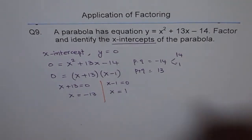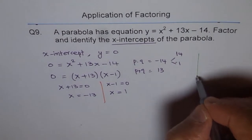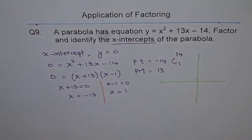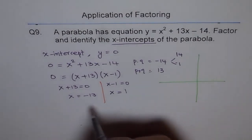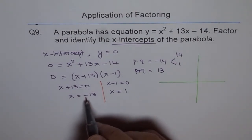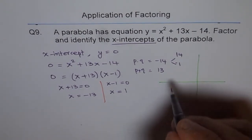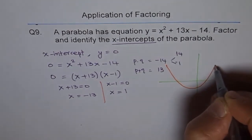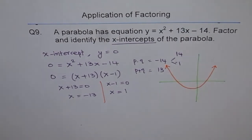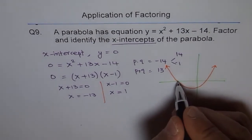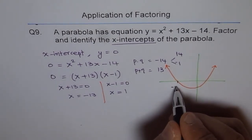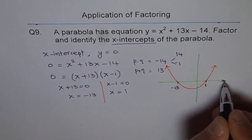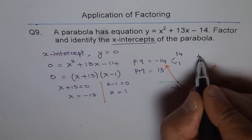So if you sketch this parabola, you'll get a graph of the function where the x-intercepts are at -13 and 1. It will be kind of like this,